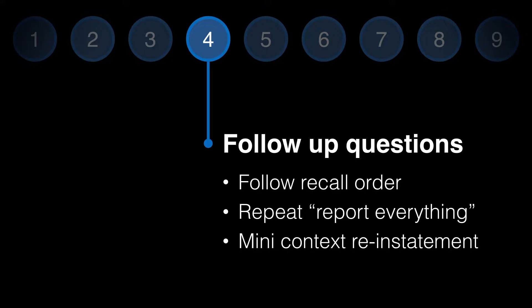After the witness has successfully recreated the context, the interviewer should prompt an uninterrupted free report of the witnessed event. In phase four, the interviewer asks questions based on the free report given by the witness. The interviewer should structure the questioning in the order that the witness remembered, as this helps to ensure that the questioning is compatible with the witness's recall.